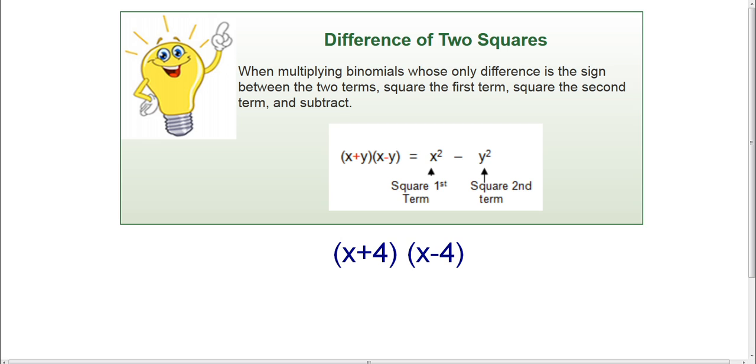Okay, so that's exactly what the difference of two squares is. When you multiply two binomials whose only difference is the sign between the two terms, you're going to square the first term, square the second term, and subtract the two. And that will give you your answer.